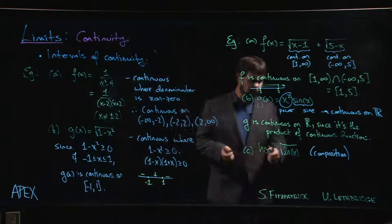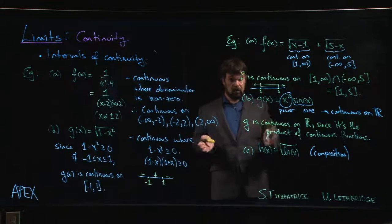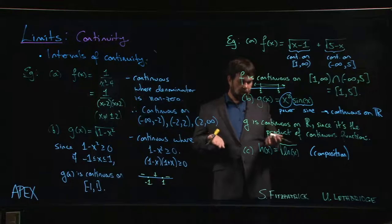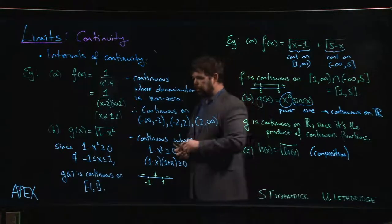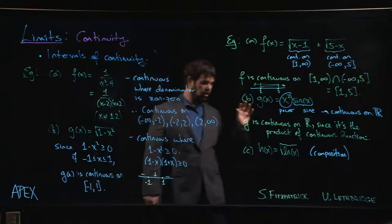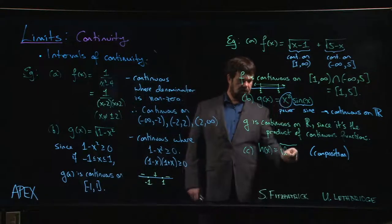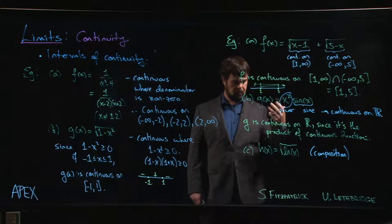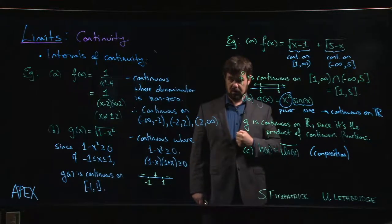The natural log function is continuous on its domain. The square root function is continuous on its domain. So both functions are continuous on their domains, but there's still the question of composition. We need to make sure that whatever input we use for the natural log, it needs to give us an output that is included in the square root.